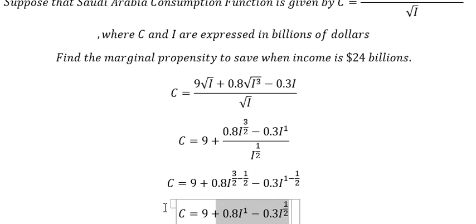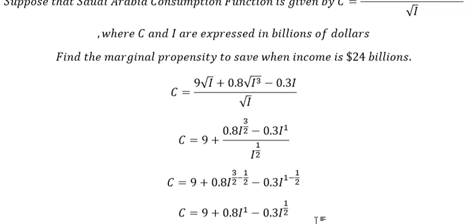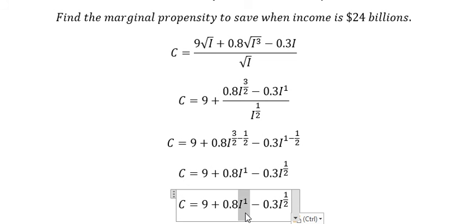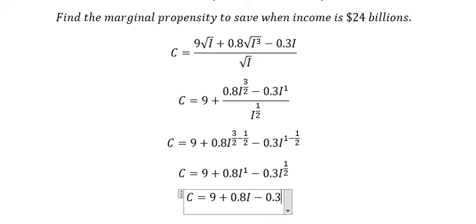So in this situation we can write it like this: C = 9 + 0.8I - 0.3√I.